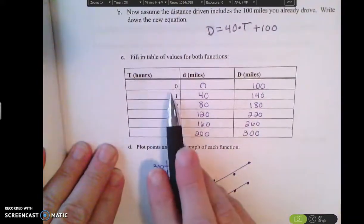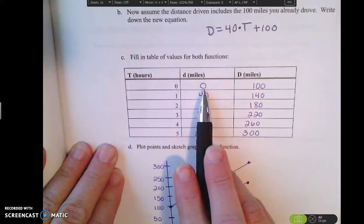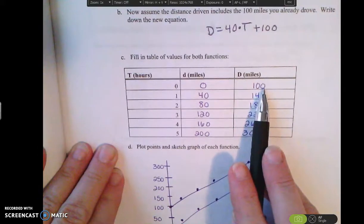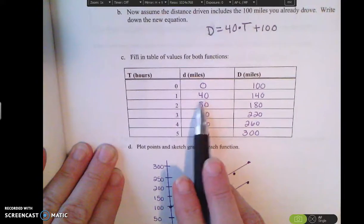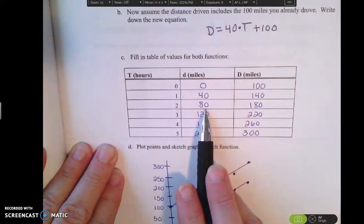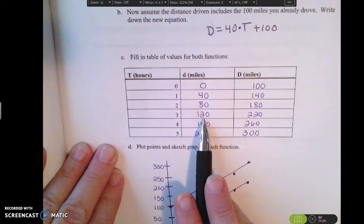So that means in zero hours, I had gone zero miles. But in this example, I'd already gone 100 miles. So in one hour, I went 40 miles. In two hours, I went 80 miles. Three hours, I went 120.